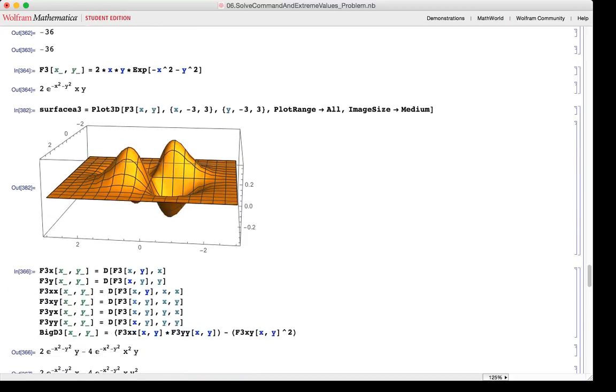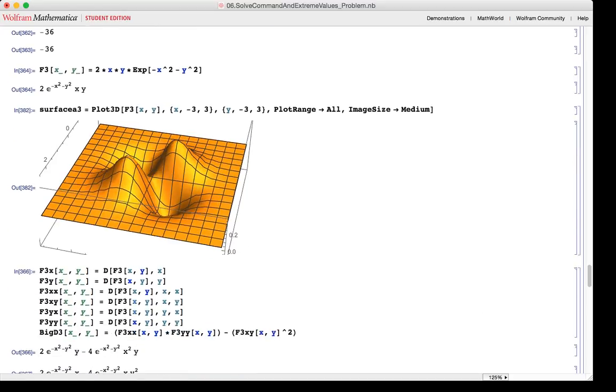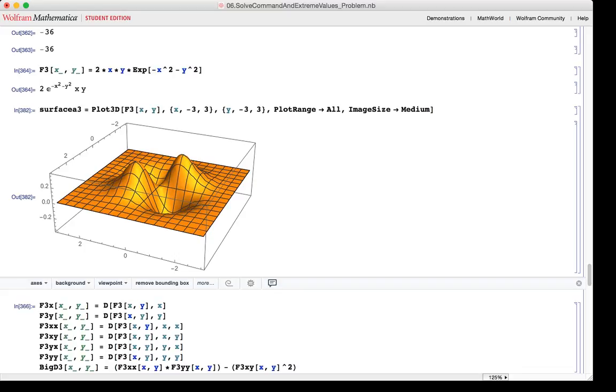Then the third function is defined. It is simply just a modified Gaussian, just xy basically times a Gaussian. Then this is plotted via the plot 3D command over the domain of minus 3 to 3. And the plot range, which is z in this case, is all, so you can see everything.